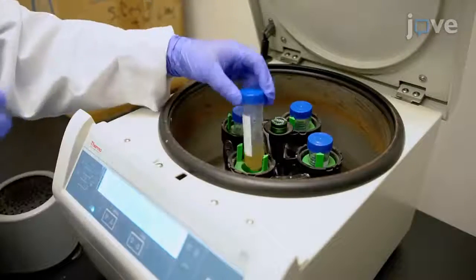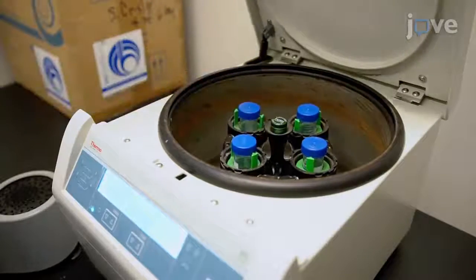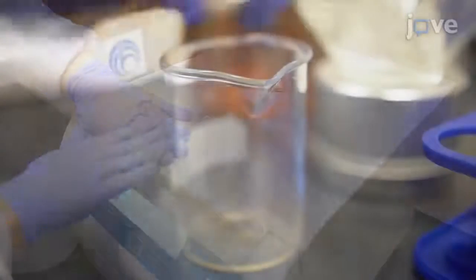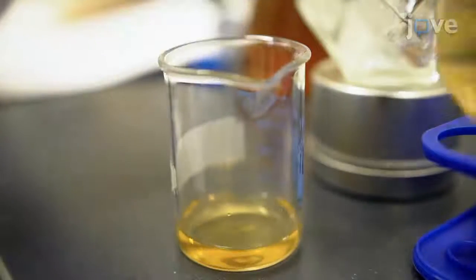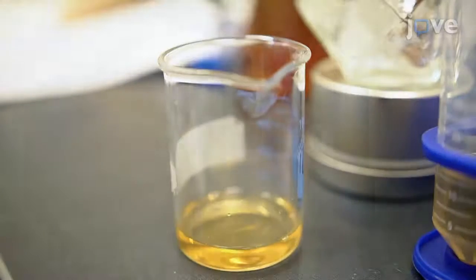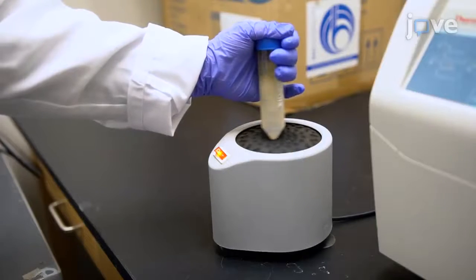Centrifuge the tubes with bacteria and growth medium at 4000xG for 20 minutes. Remove the supernatant, replace with 25 mL of fresh growth medium, and mix well using a vortex machine.